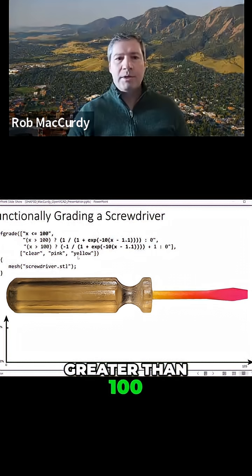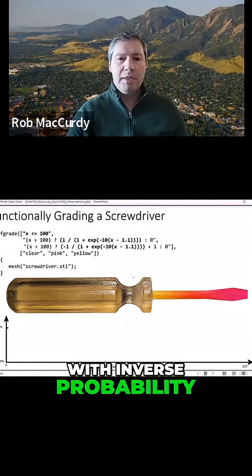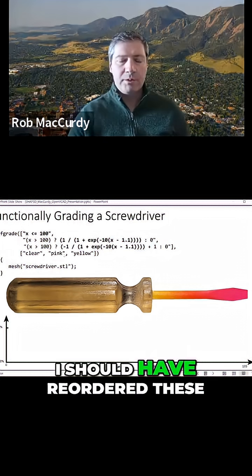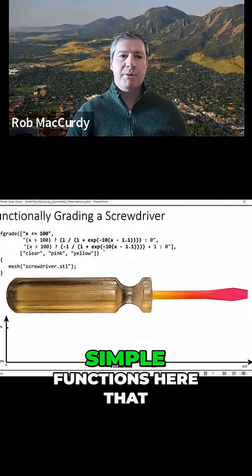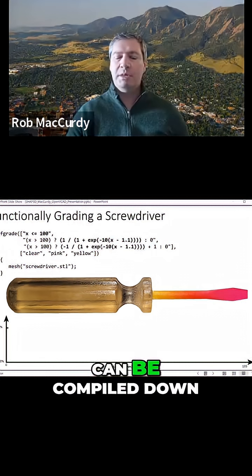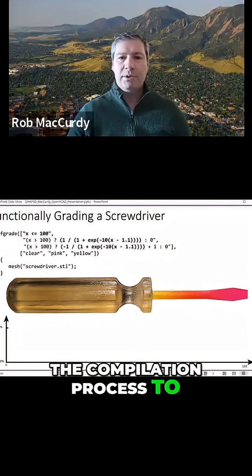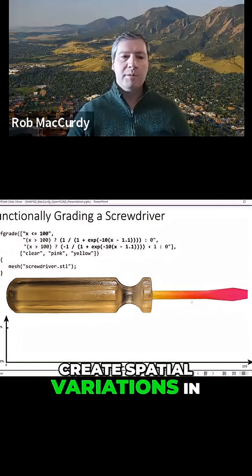And then when it's greater than 100, with inverse probability, it transitions from yellow to pink in this case. I should have reordered these, but I think you get the idea. So we've got some simple functions here that can be compiled down during the compilation process to create spatial variations in the material.